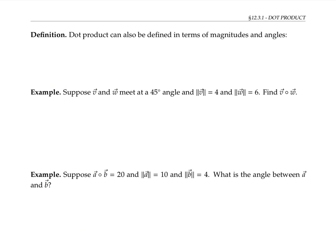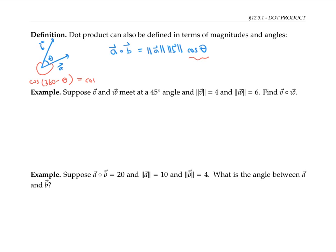So far we've defined dot product in terms of components, but it can also be defined in terms of magnitudes and angles. If we have two vectors a and b, and theta is the angle between them, then a dot b equals the magnitude of a times the magnitude of b times cosine of theta. There are two angles you could use between two vectors, but it doesn't matter which you choose, because cosine of (360 minus theta) equals cosine of theta.